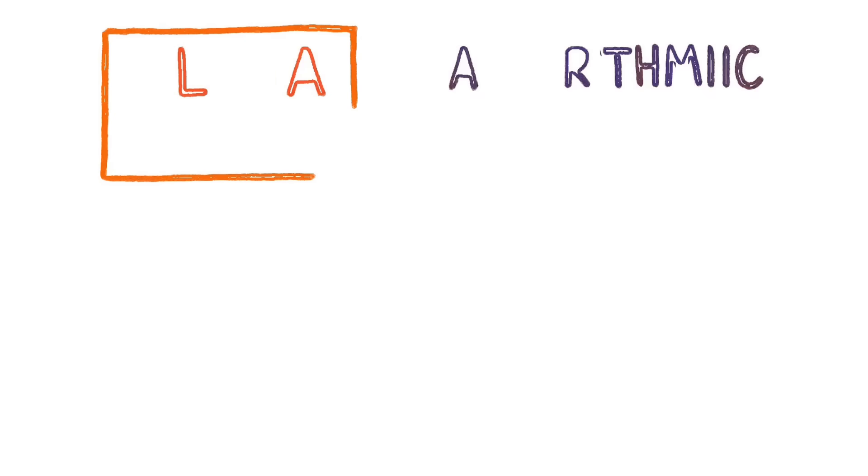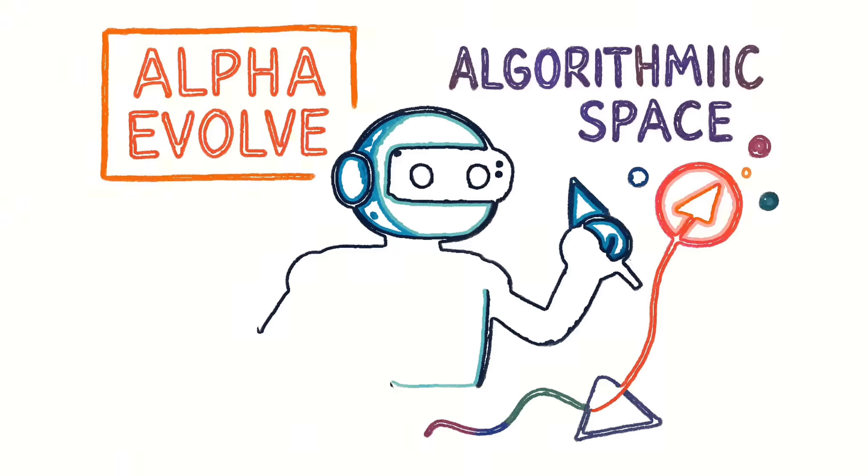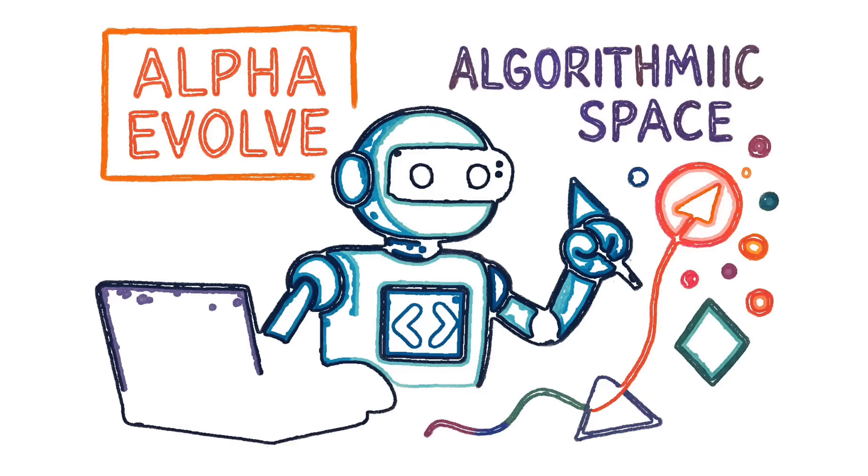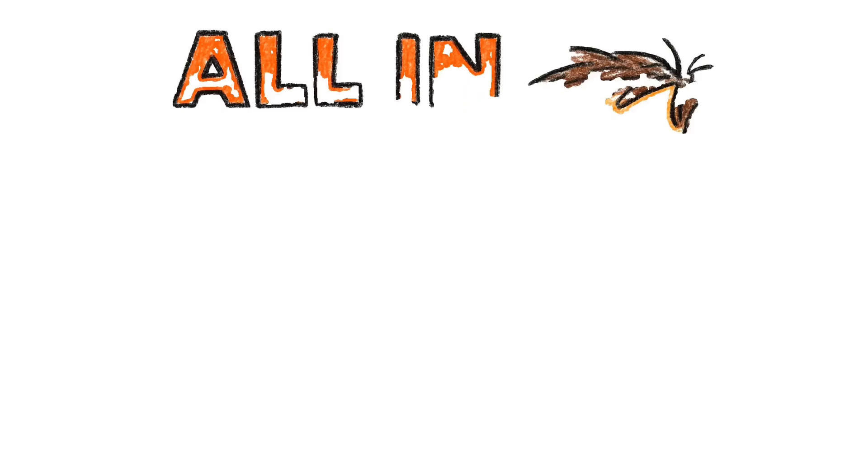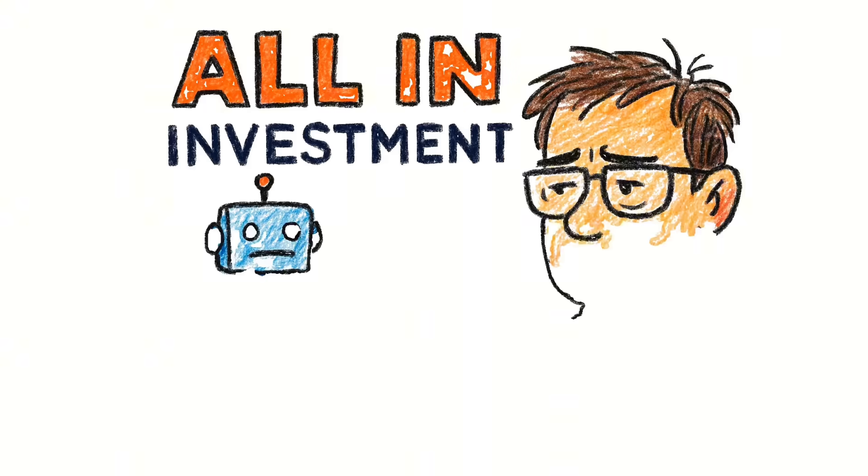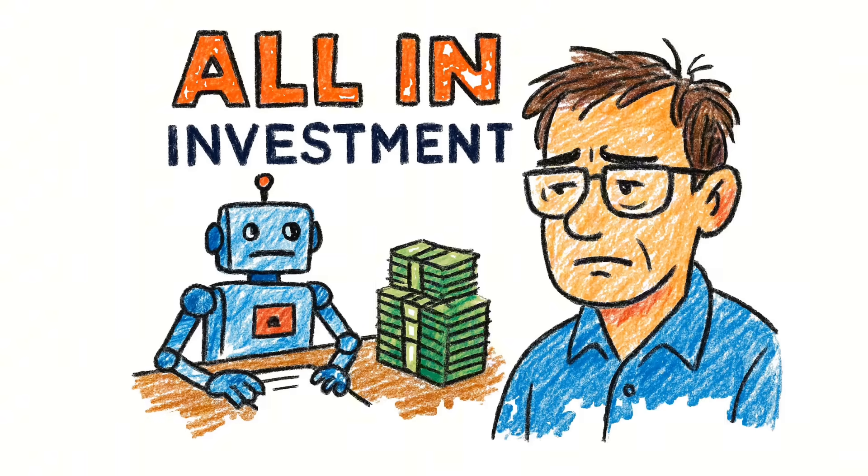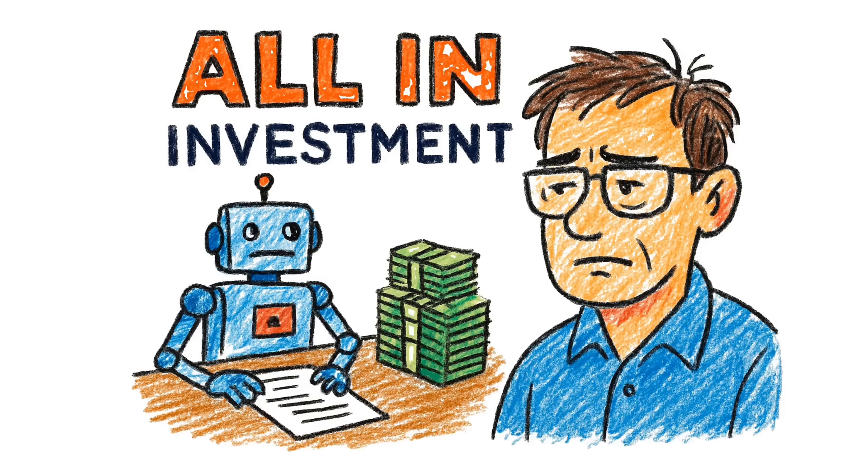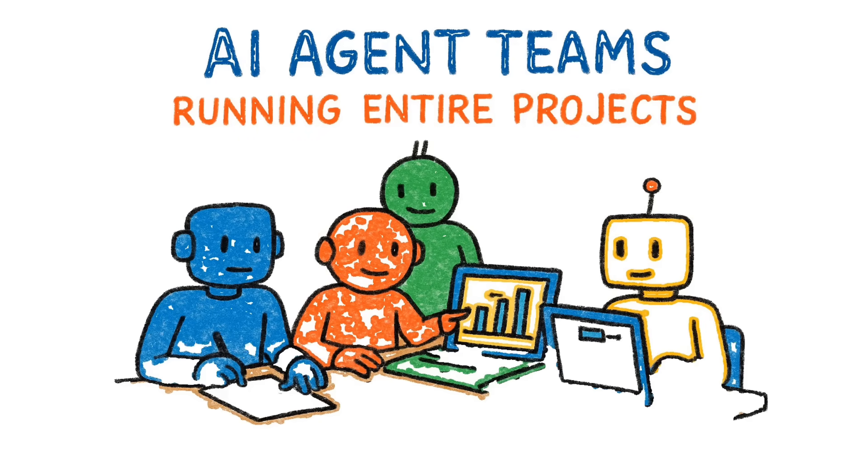Another one, Alpha Evolve, is a coding agent that doesn't just write code. It actively explores the infinite space of algorithms to discover fundamentally better methods. Hassabis is up front that these agents aren't reliable enough yet to fully automate a long project. But that is exactly where all the investment is going. By 2026, expect to see AI agent teams that can run entire projects, coordinating with each other to deliver results that would take human teams months.